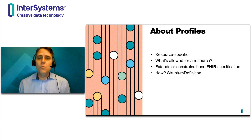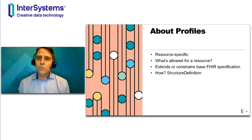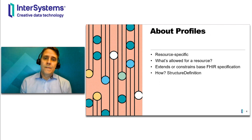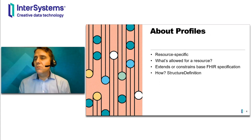A little bit more about profiles. Profiles are resource-specific. So when you're talking about profiles, you should be talking about the patient profile, the observation profile, the encounter profile. People do commonly refer to the entire implementation as a profile, but technically this isn't correct. For instance, you'll hear people talk about the U.S. Core profile. Actually, U.S. Core is an implementation guide that contains profiles and other FHIR artifacts. Basically, a profile says what's allowed for this resource — what data fields are allowed for this type of resource — and it does this by extending or constraining the base FHIR specification for that resource.